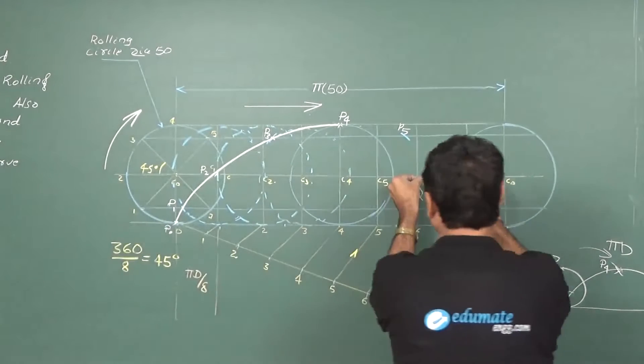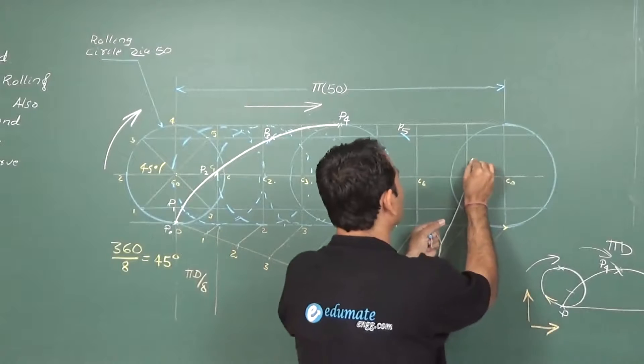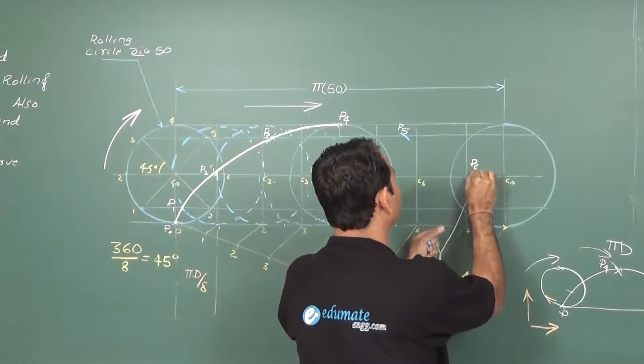Keep it 6, C6. Then cut on the line coming from 6. This will give the next point on the curve P6.